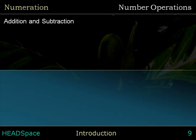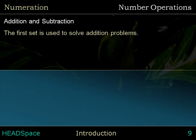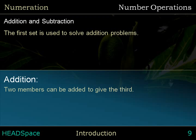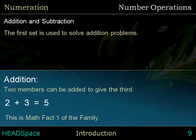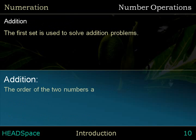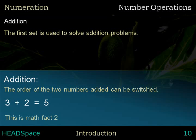The first set is used to solve addition and subtraction problems. For addition, two members can be added to give the third: 2 plus 3 equals 5. This is math fact 1 of the family. The order of the two numbers added can be switched: 3 plus 2 equals 5. This is math fact 2 of the family.